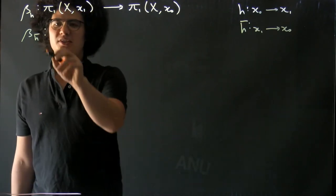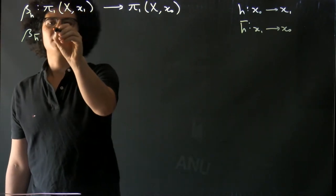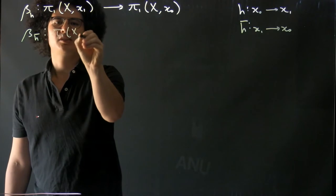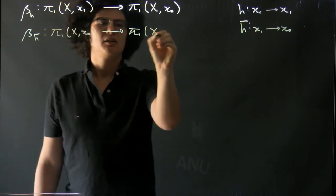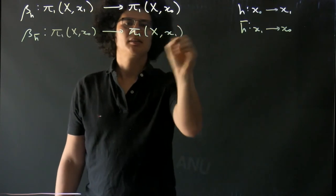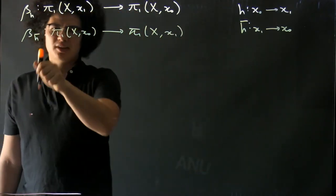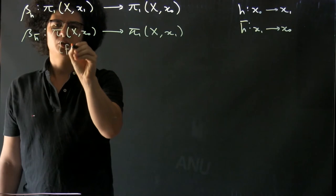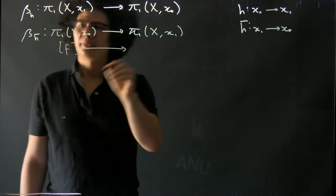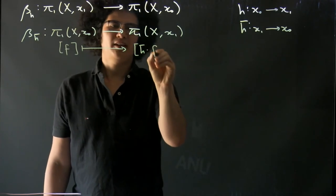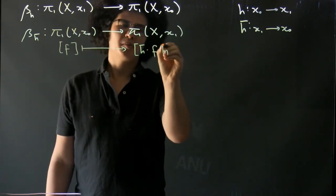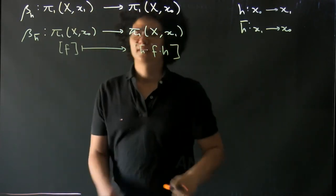And we should see that it's going to take us from the fundamental group at x₀ to the fundamental group at x₁. Now we're going to use the same rule here, so this is going to take a loop at x₀ to h bar f h double bar, but that's just h.